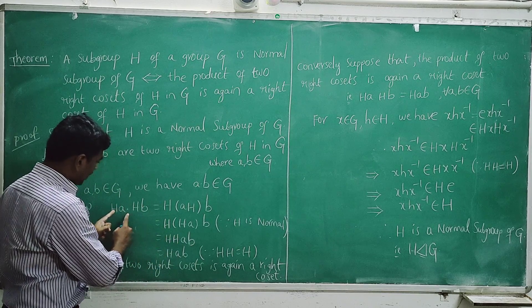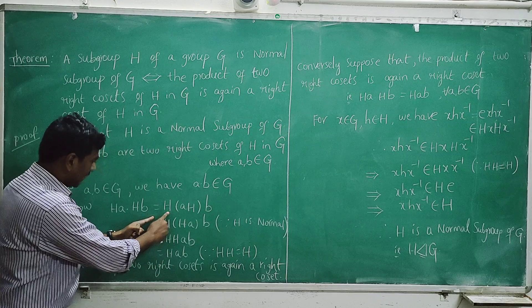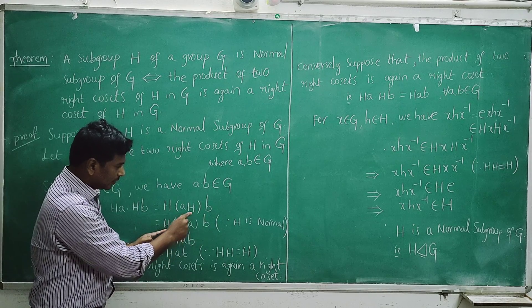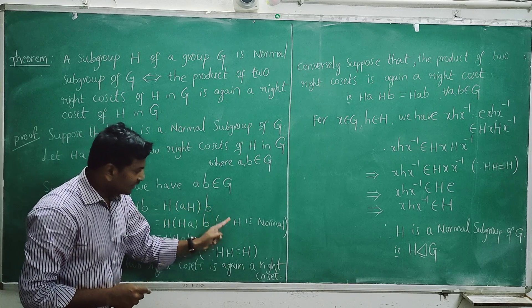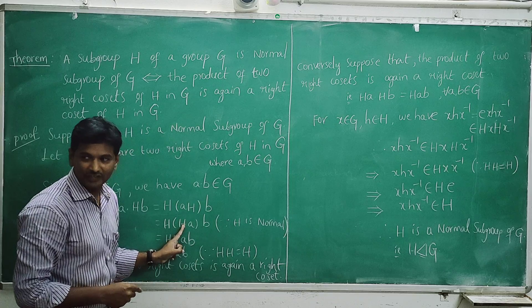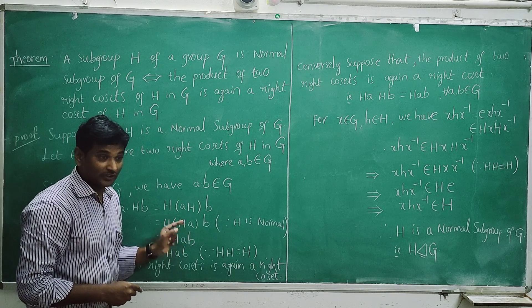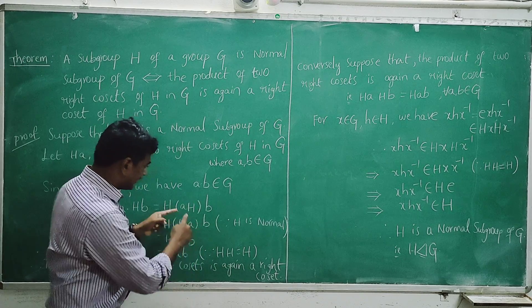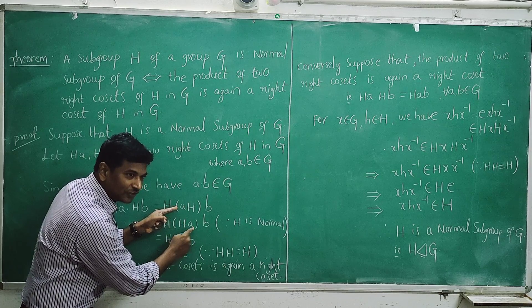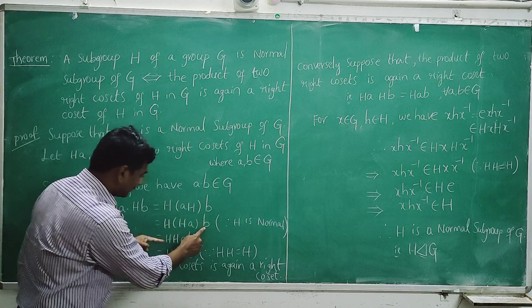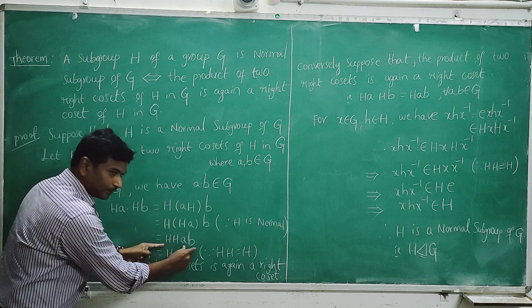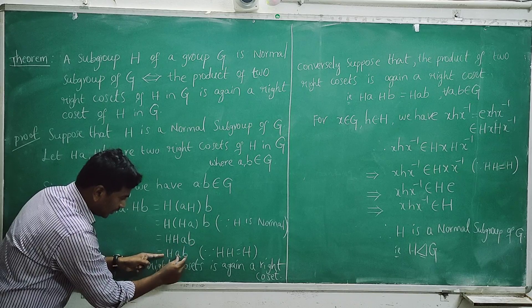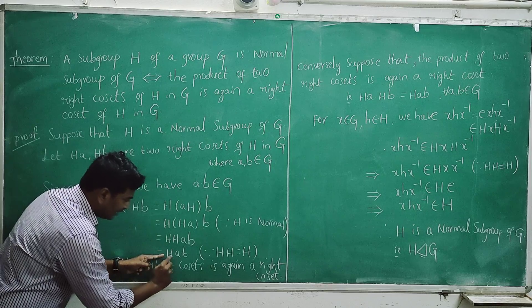Consider the product of two right cosets: Ha into Hb. That is equal to H times (ab). We know that AH is equal to HA — every left coset of H in G equals the right coset of H in G. So we use HH equals H, which is a very important theorem. Therefore Ha · Hb equals H(ab), which is again a right coset, since ab belongs to G.